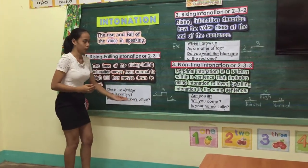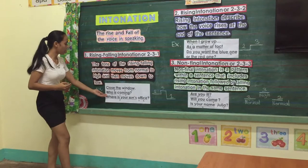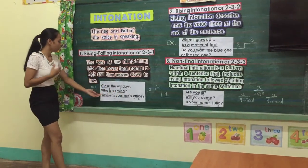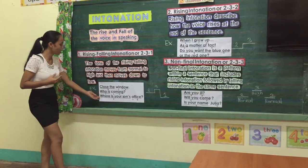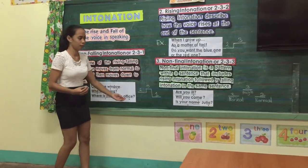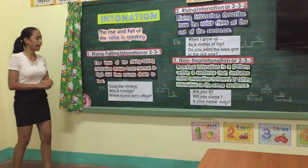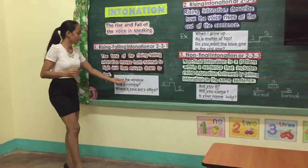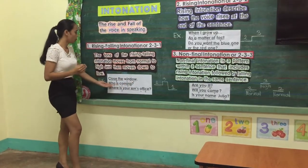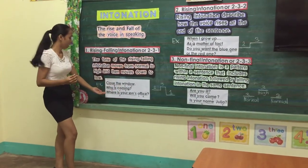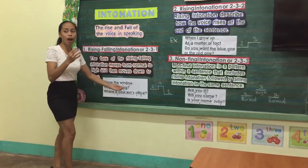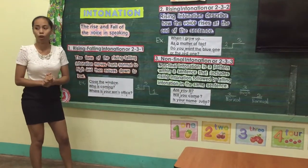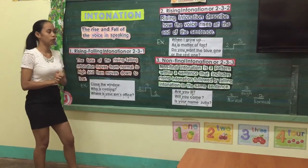Number 1: 'Close the window.' Number 2: 'Who is calling?' Number 3: 'Where is your son's office?' Please repeat after me, class: 'Close the window.' These are the examples of rising-falling intonation.